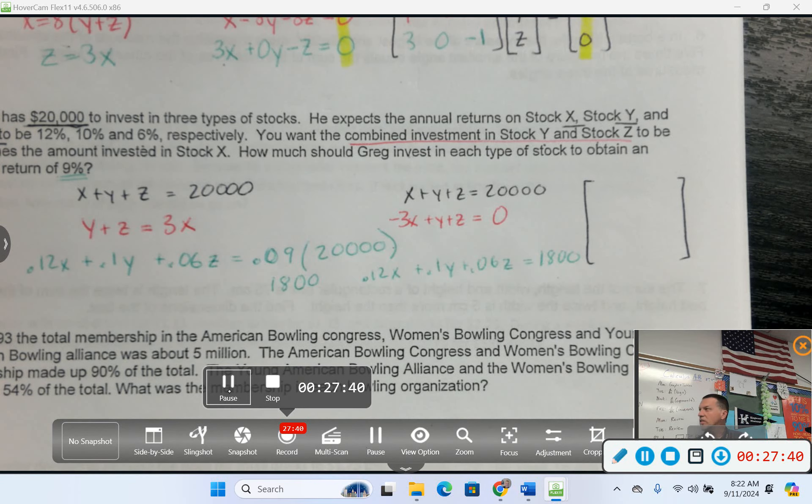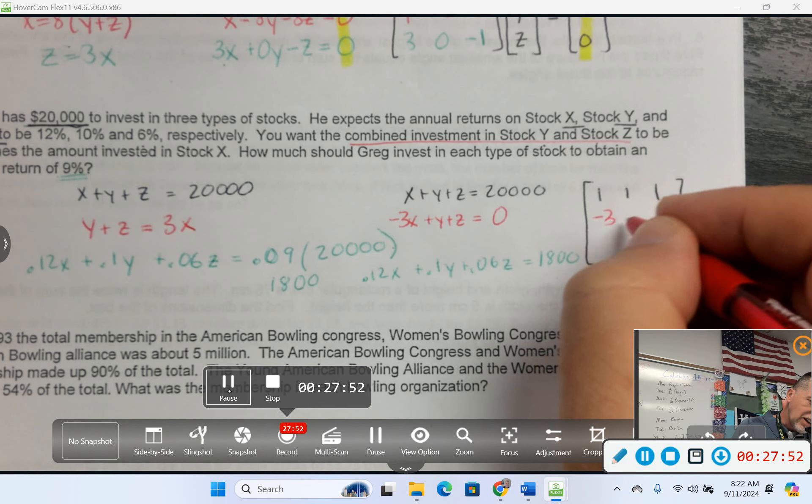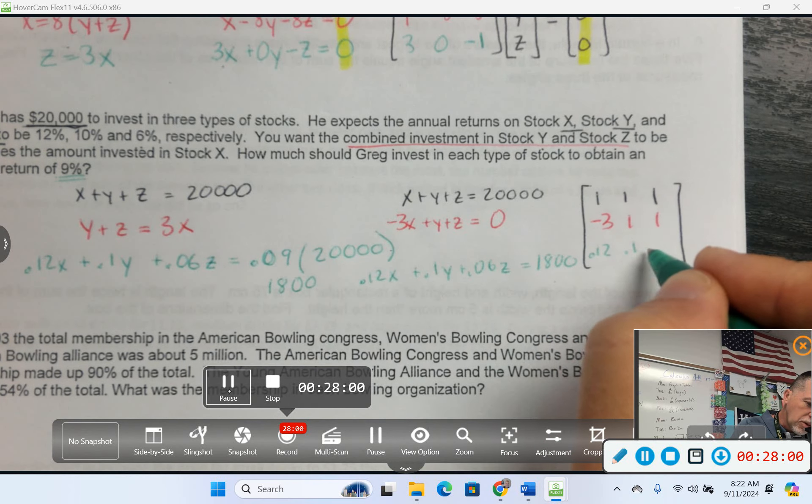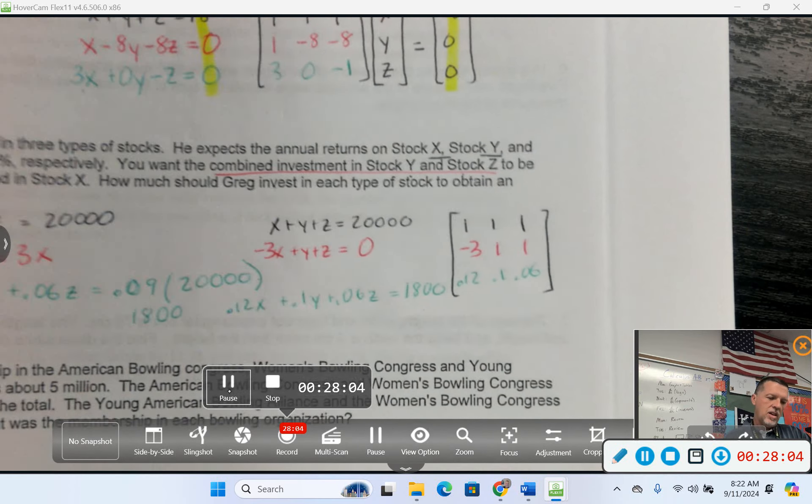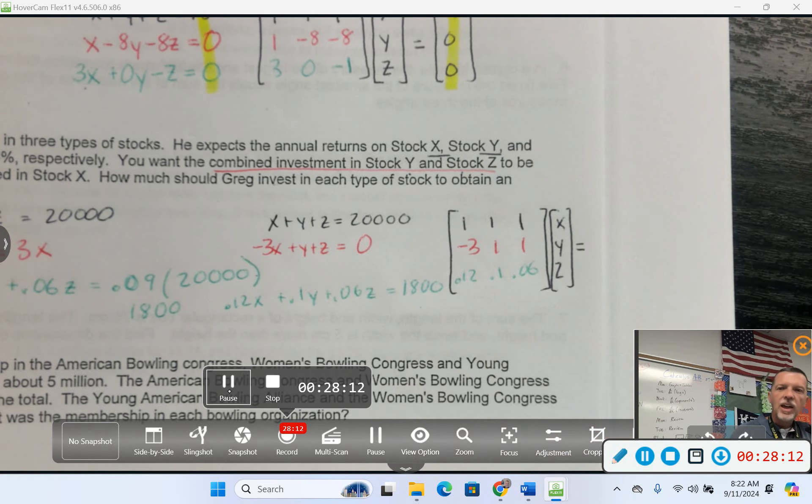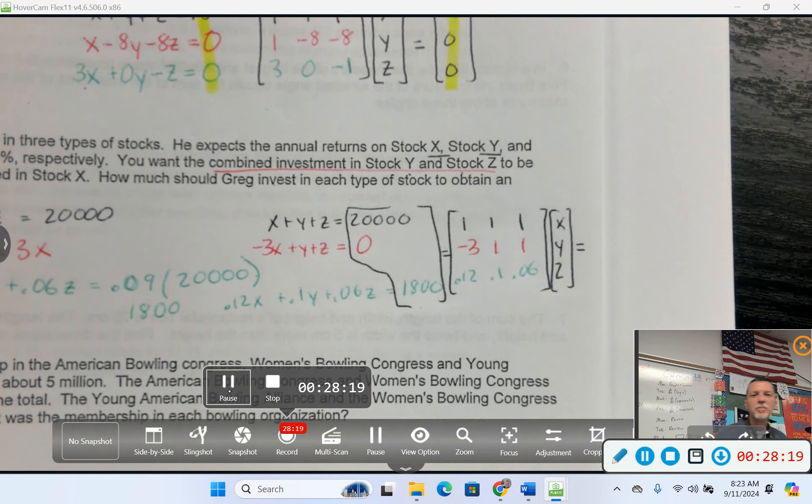X plus Y plus Z equals 20,000. My red equation, I need to move things. Negative 3X plus Y plus Z equals 0. And the green one's pretty much set up the right way: 0.12X, 0.1Y, 0.06Z equals 1800. Now I just need to grab the coefficients. The first row is 1, 1, 1. The second row is negative 3, 1, 1. The third row is those percentages 0.12, 0.1, 0.06. My column matrix is x, y, z, and my answer matrix is 20,000, 0, 1800. We'll worry about solving it on Friday because now we're going to go to the calculator and learn where all the buttons are.